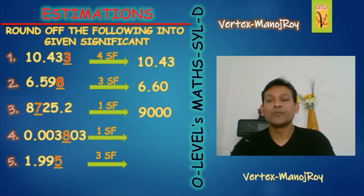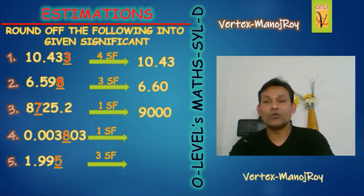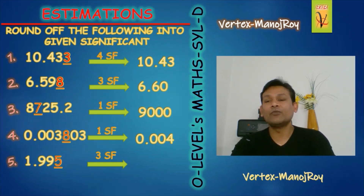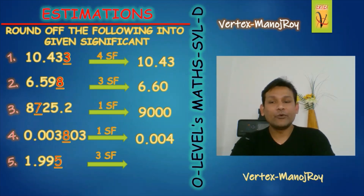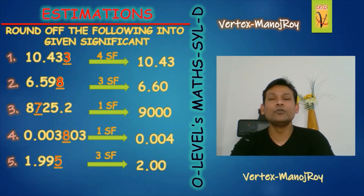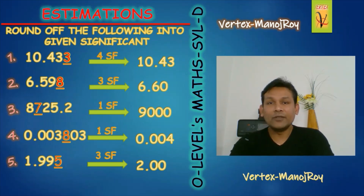Next example: 0.00 — the leading zeros are not significant. I want one significant figure, so I drop this 8. This becomes 0.004, which is one significant figure. Then: 1.995 into three significant figures. Drop this 5 — it is equal to five, so drop it and add one. The 1.99 becomes 2.00, which is three significant figures, because all zeros after the decimal are significant when the number before decimal is non-zero.